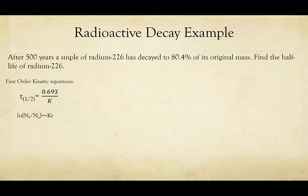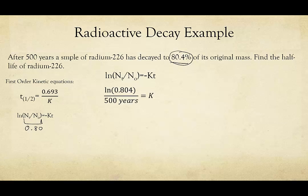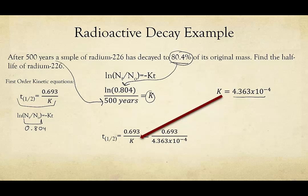Let's do an example. After 500 years, a sample of radium-226 has decayed to 80% of its original mass. Find the half-life of radium. We need to make sure we're always careful about how the percents are worded. In this case, it's 80% of its original mass, so that's going to be 0.8. What we can do is rearrange our integrated rate law and solve for k. We fill in 80% and the 500 years, solve for k, and then fill that into our half-life equation. We get 1,590 years.